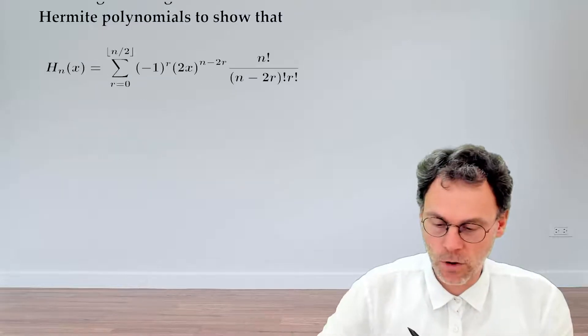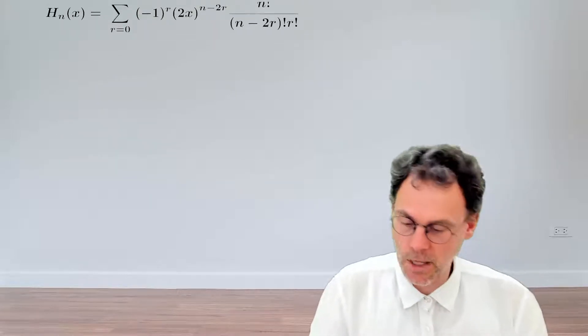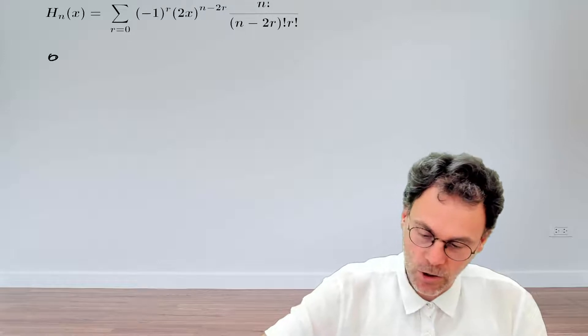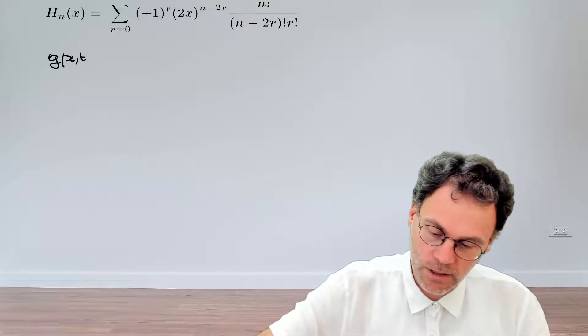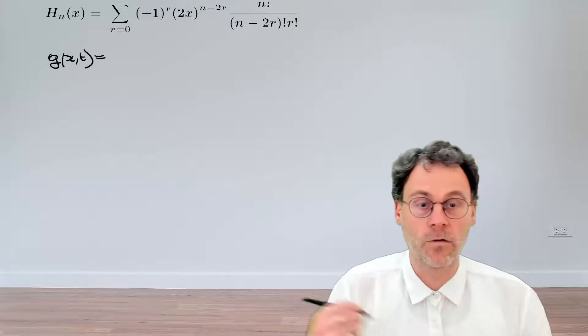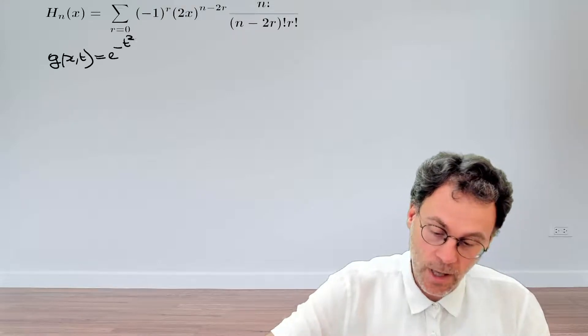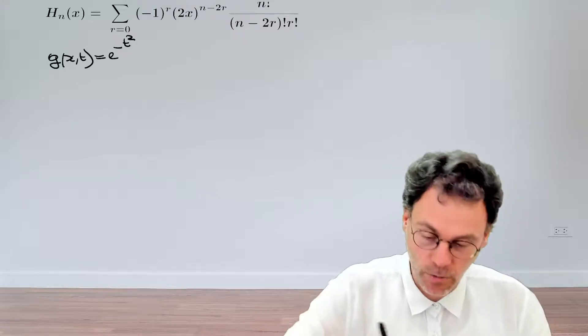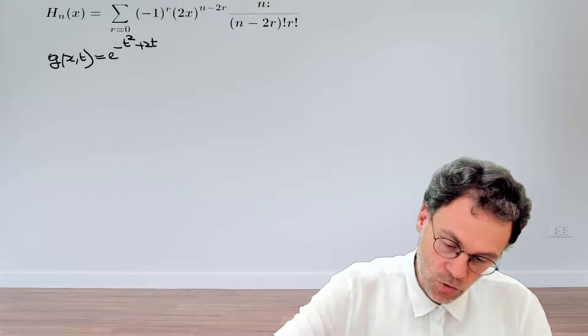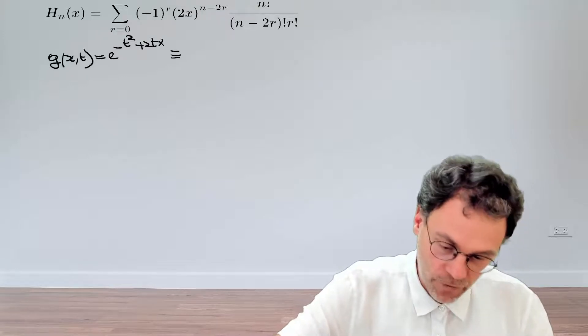So let's recall the generating function in this case. A generating function is a function of x and t, and for the Hermite polynomials that takes the form exponential minus t squared plus 2tx. And by definition,